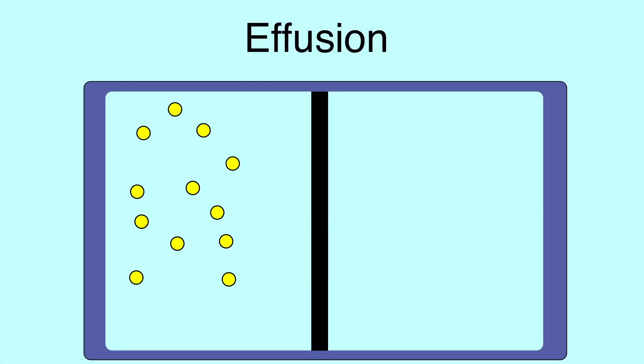Effusion is the rate at which gas particles will escape through a tiny hole. So let's imagine a closed container that has a gas on one side and a solid divider in the middle. If you make a tiny hole in the divider, the gas particles will eventually make their way through the hole into the other side of the box.